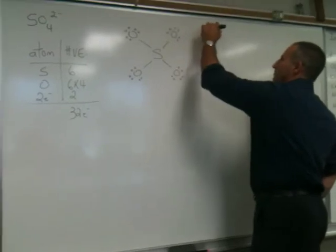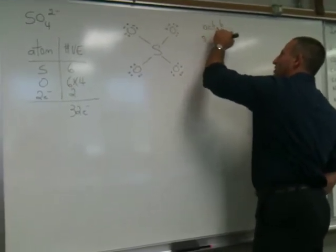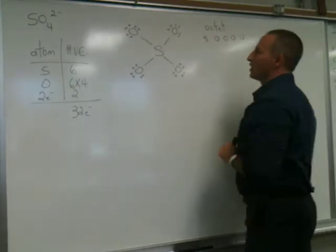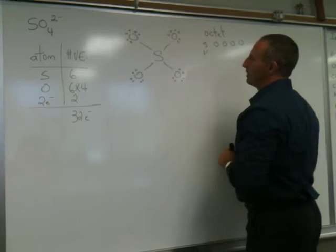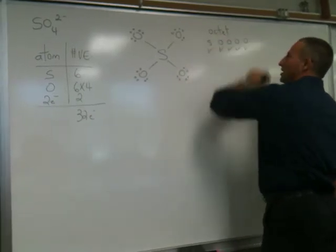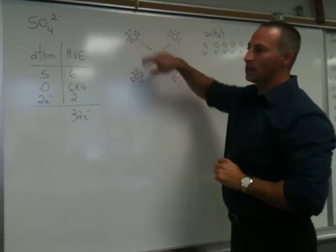Now let's check for the octet, if the octets are being fulfilled for each one of these atoms. Sulfur has a full octet, so that would be okay. And each one of the oxygen atoms is okay. They each have 2, 4, 6, 8. The bond counts for 2.